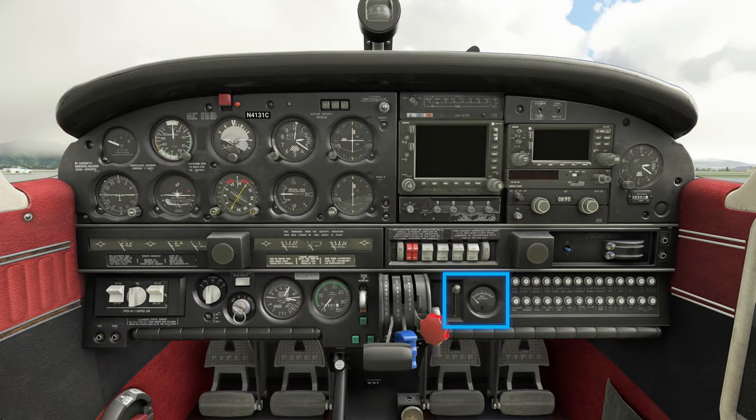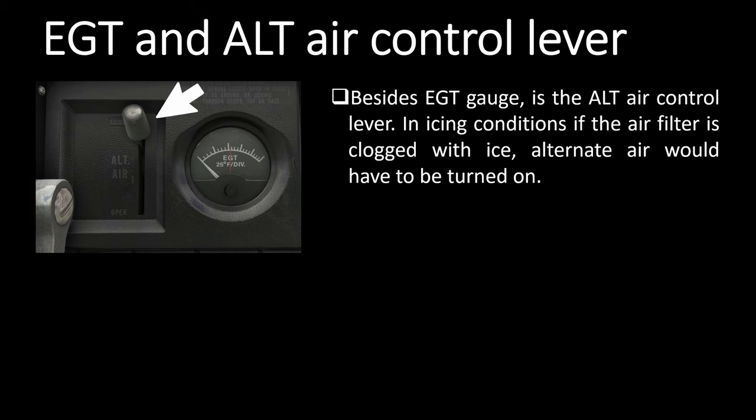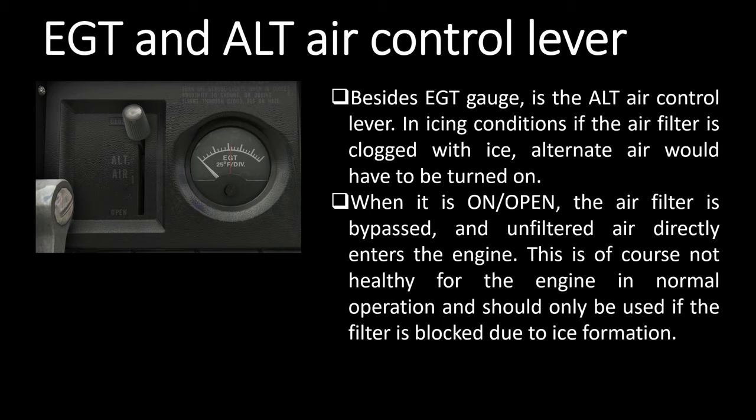As we go further down in the cockpit, there is an exhaust gas temperature gauge. It shows the exhaust temperatures in the exhaust manifold, helping monitor engine health and making sure the EGTs are within the limit at all times. Besides that is the alternate air control lever. In icing conditions, if the air filter is clogged with ice, alternate air would have to be turned on. When it is on, the air filter is bypassed and unfiltered air directly enters the engine. This is not healthy for the engine in normal operation and should only be used if the filter is blocked due to ice formation.